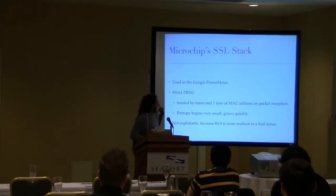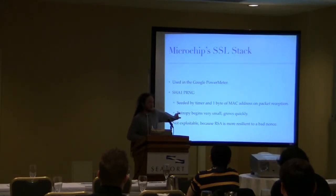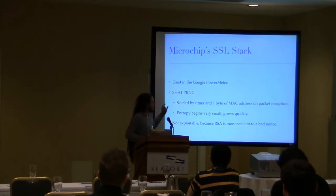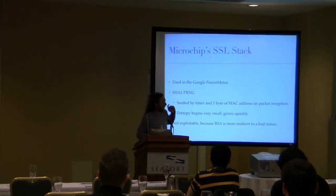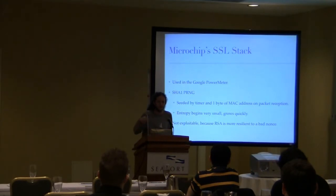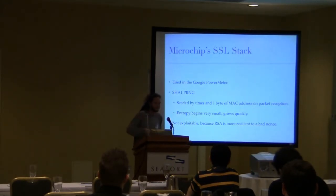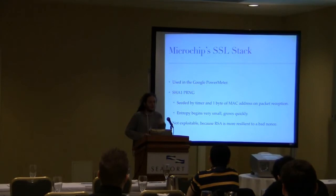This would have been exploitable, except that RSA is a lot better than ECMQV when it comes to a bad bounce. The only bad state as far as an RSA random number is when an attacker can actually control which number is sampled.